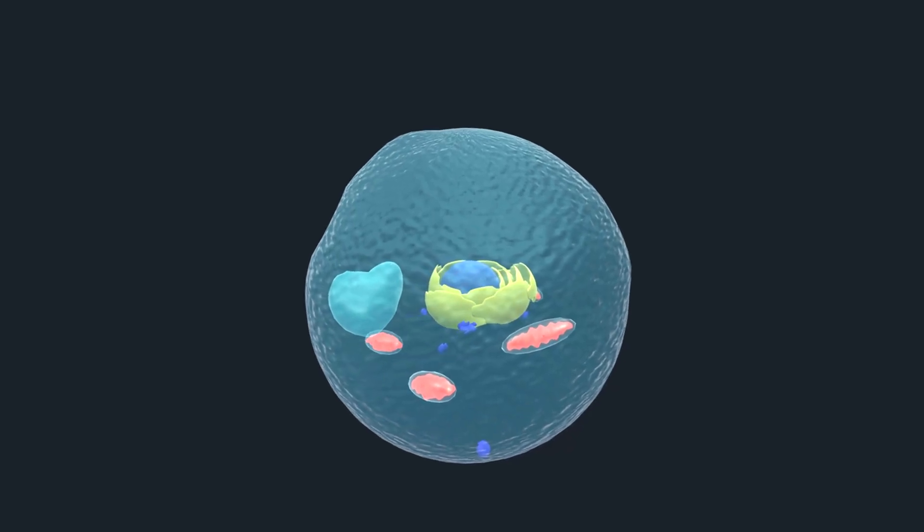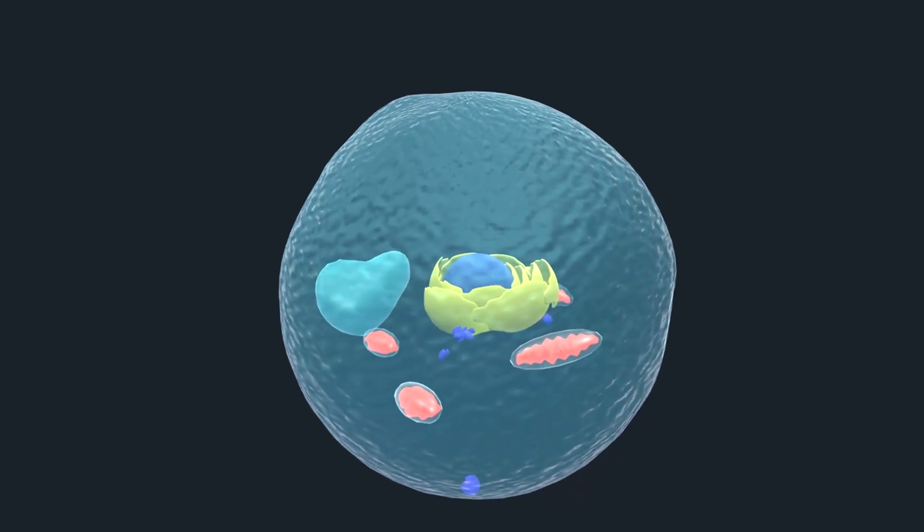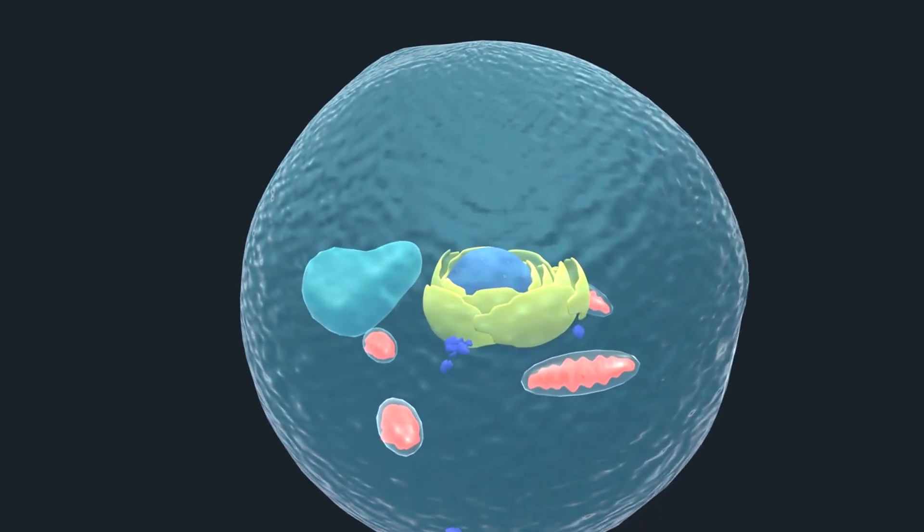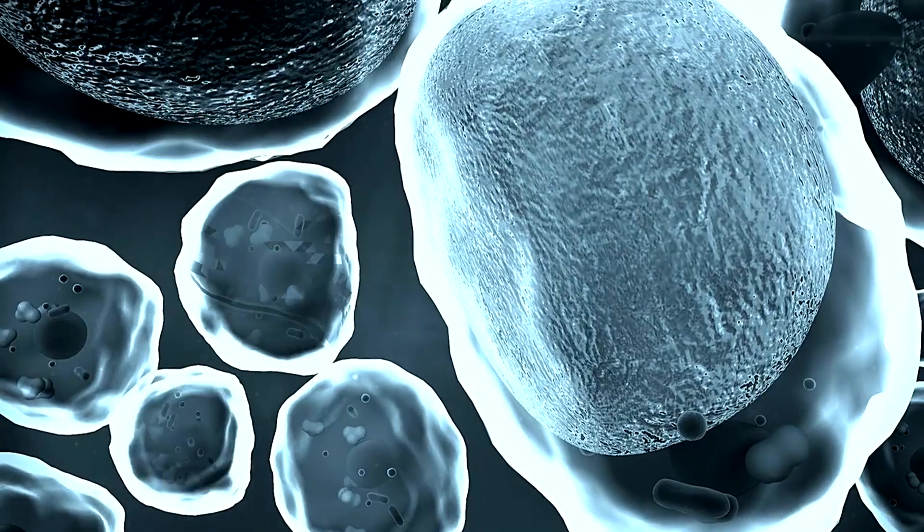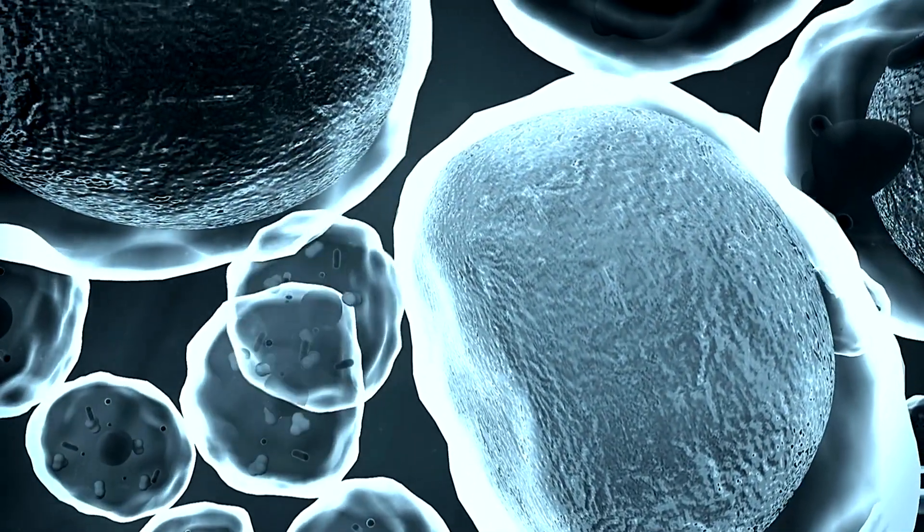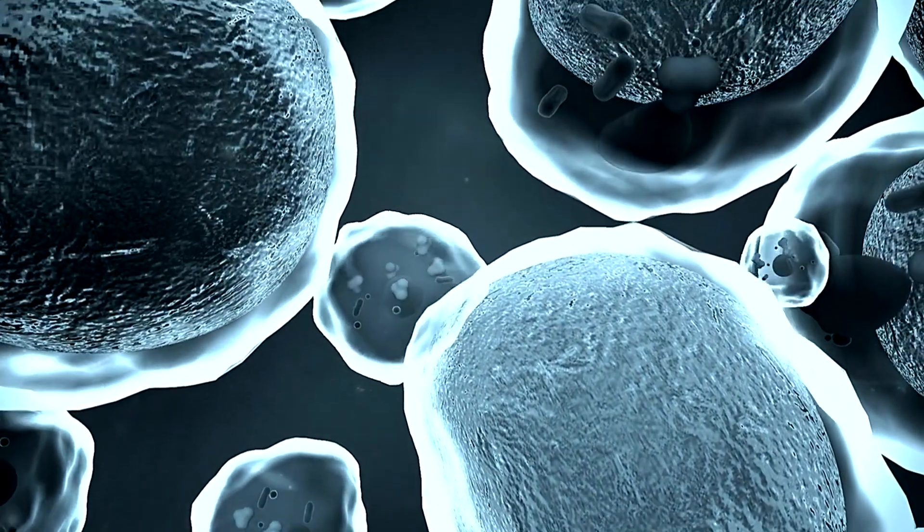Cell theory is a fundamental principle in biology that has greatly shaped our understanding of living organisms. At its core, it states that all living things are composed of cells, which are considered the basic units of life.